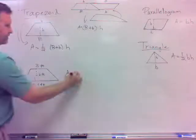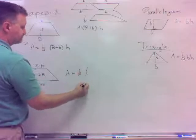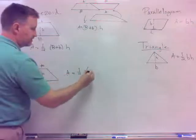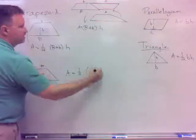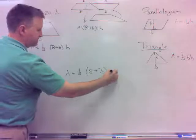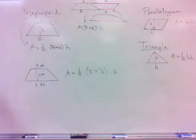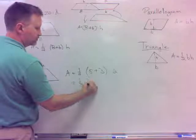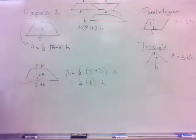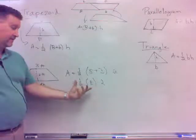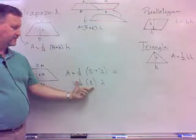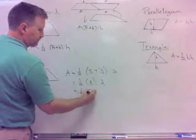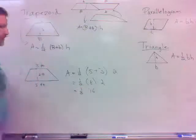So area-wise, what you do is you take half times, what's Big B? Five plus little b, three, and then times the h on the outside, which would be two. And so the deal is you've got to add the Big B plus Little B, which gives you eight times your two. And it's a matter of however you want to do it. You can do the eight times two and then do the half. Half times sixteen is eight.